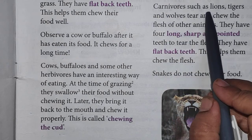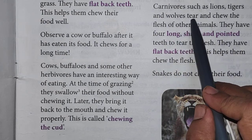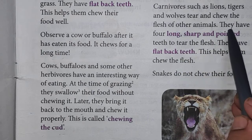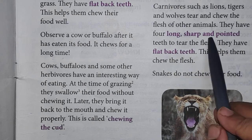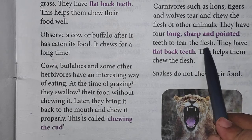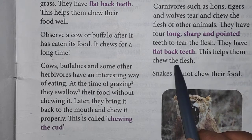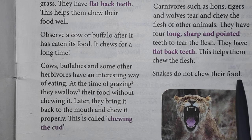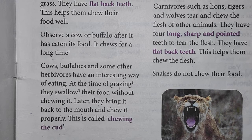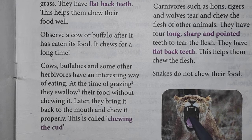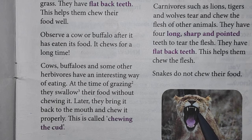Carnivores such as lions, tigers and wolves tear and chew the flesh of other animals. They have four long, sharp and pointed teeth to tear the flesh, and flat back teeth to chew the flesh. Snakes do not chew their food — they just swallow it, and it is digested with the help of muscles present in the body. Here, the teeth of a carnivore are shown — sharp front teeth and flat, strong back teeth which help chew flesh.